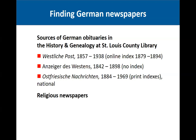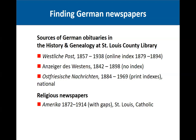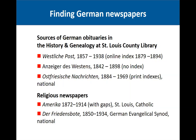We also have a few religious or church newspapers. One is Amerika, published between 1872 and 1914 — a Catholic newspaper published here in St. Louis. All of the newspapers listed so far have been digitized and are available on newspapers.com, so if you have a subscription you should be able to access these titles. One more is Der Friedens-Bote, published between 1850 and 1934, a newspaper published by the German Evangelical Synod of North America — that denomination is now part of the United Church of Christ.